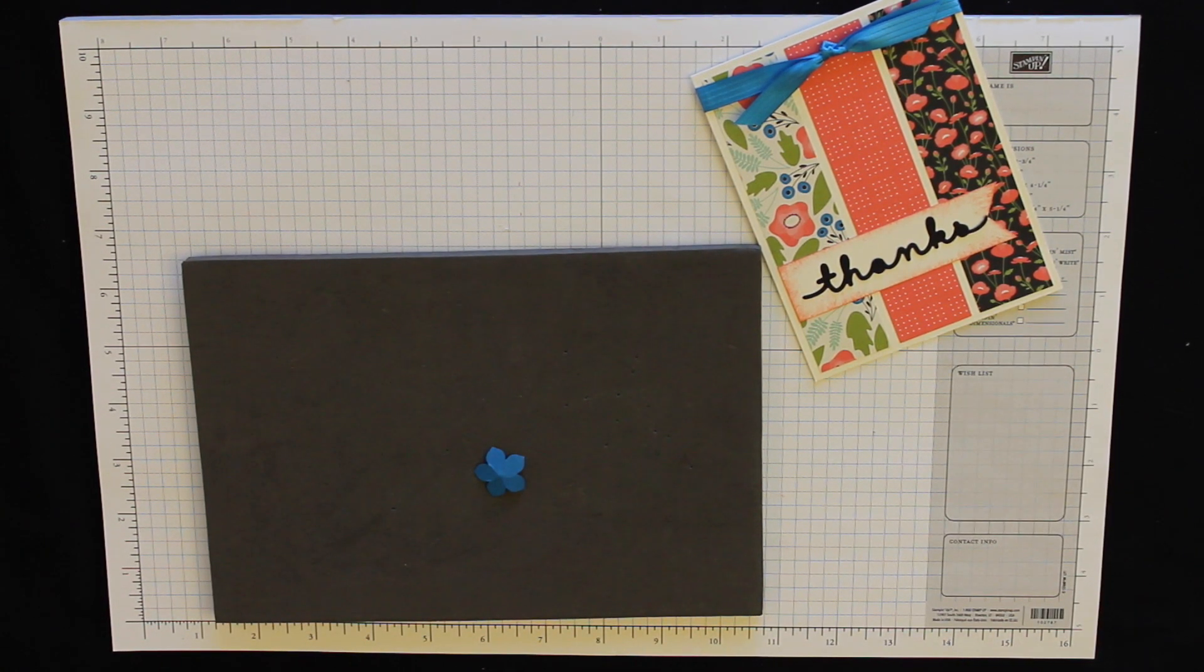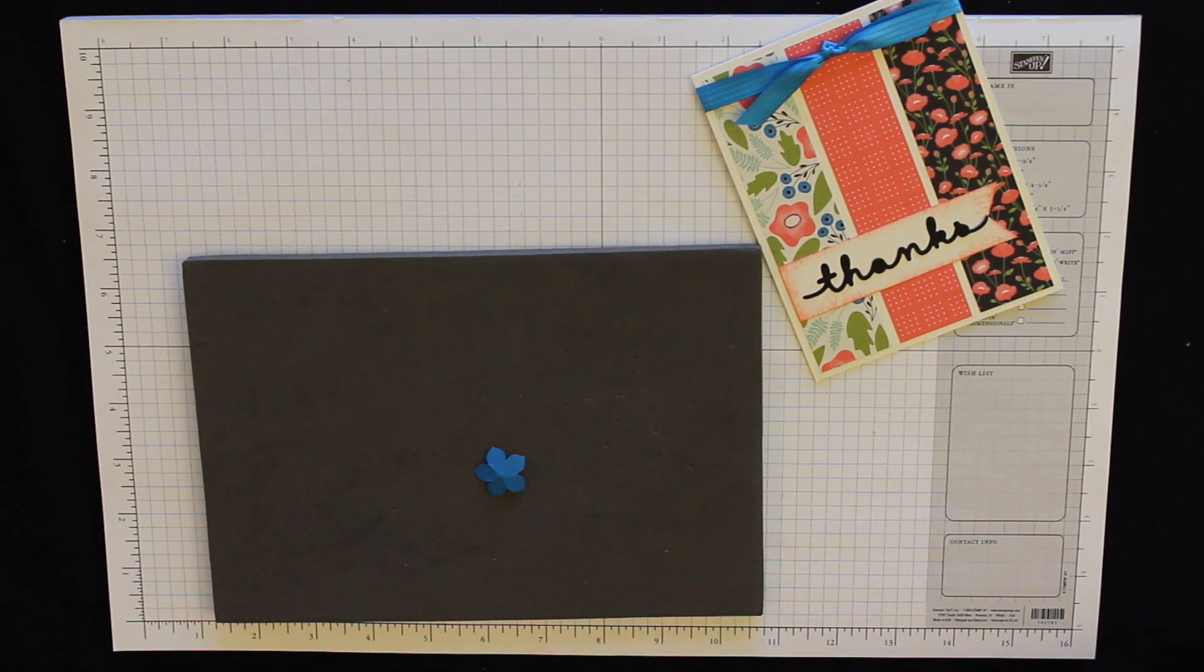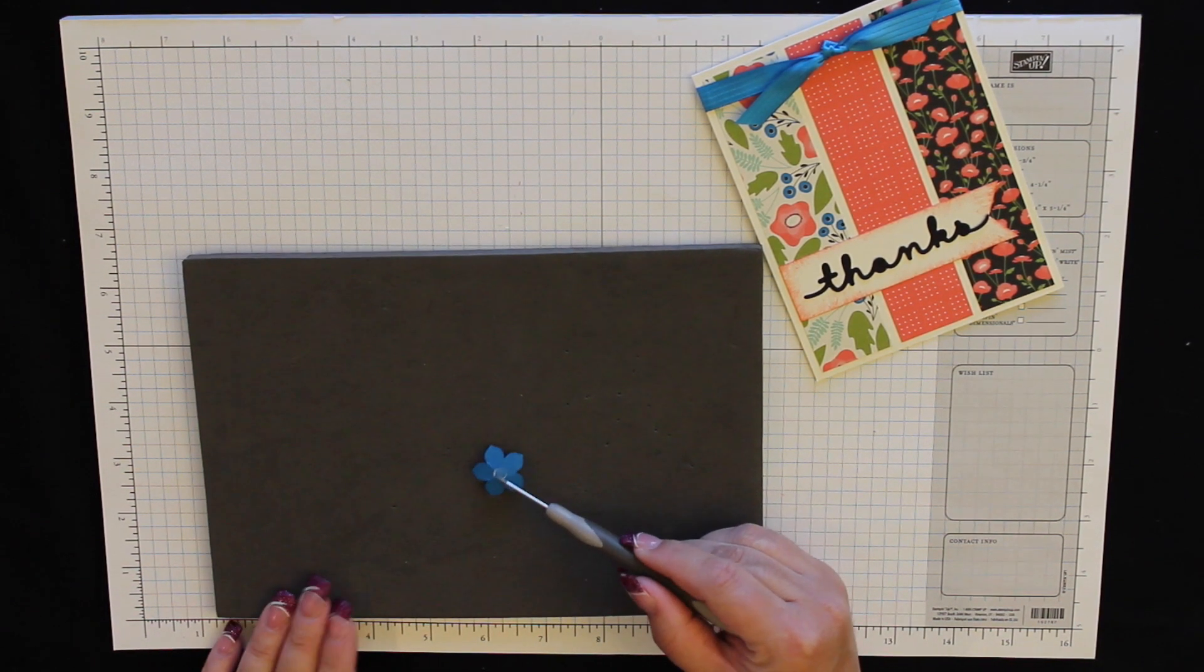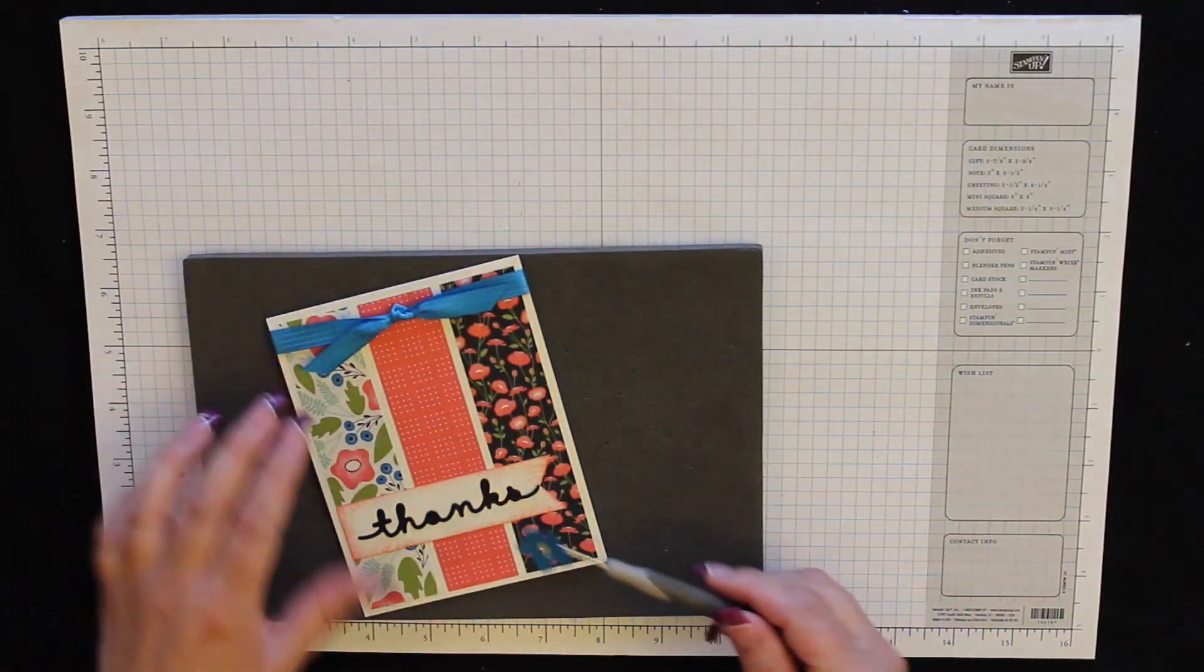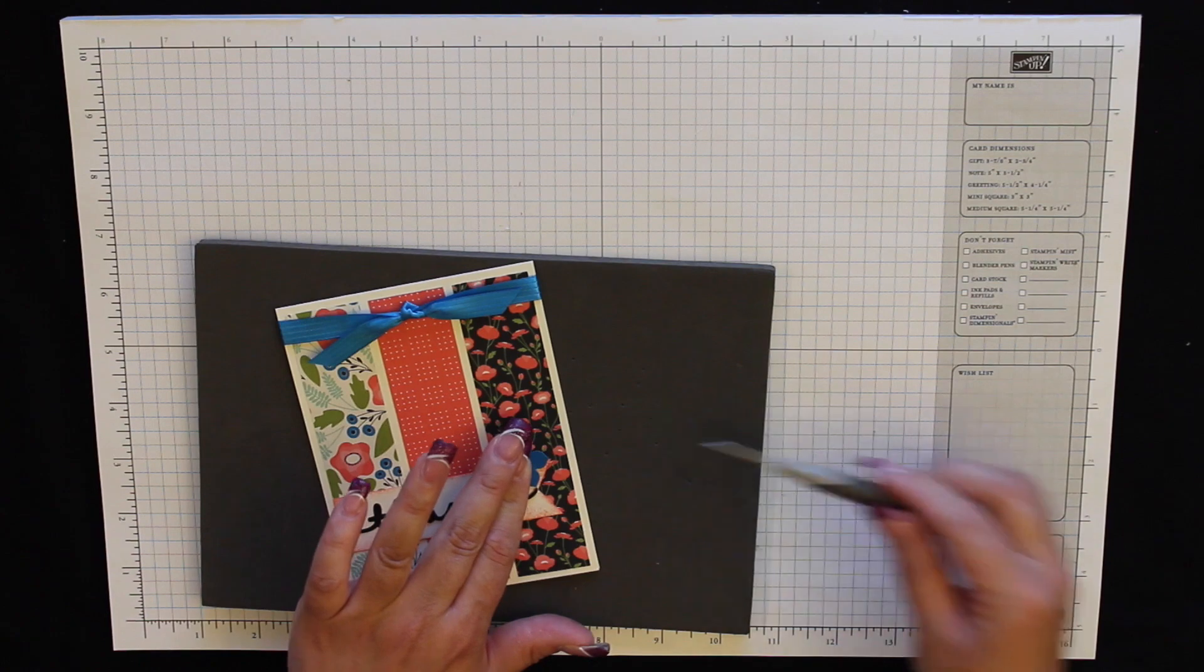And now I need my glue dots. So lift one of the glue dots off with your paper piercing tool. Put that on the back. And then just put the flower wherever you'd like it. About right there. And there we go.